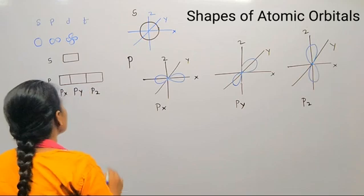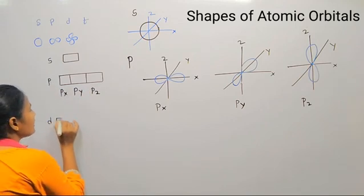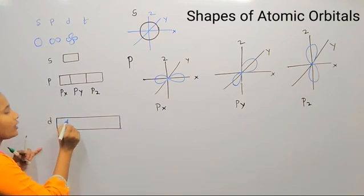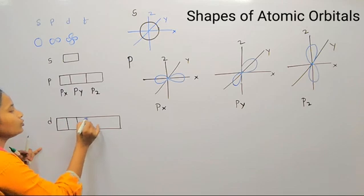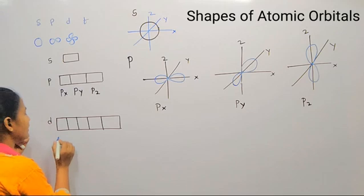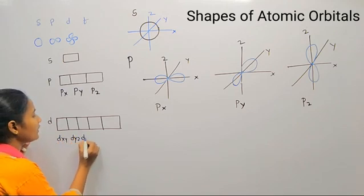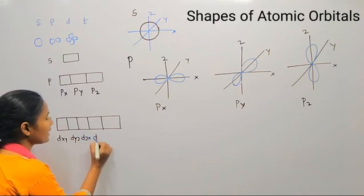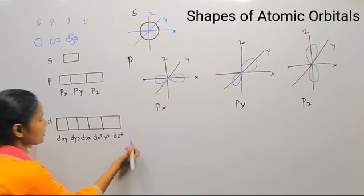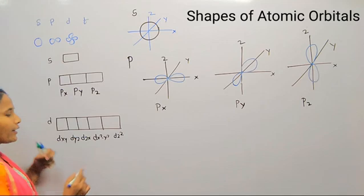For the d orbital, there are five boxes, each containing its own name. The first is dxy, the second is dyz, the third is dzx, the fourth is dx-squared minus y-squared, and the last one is dz-squared.